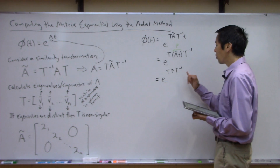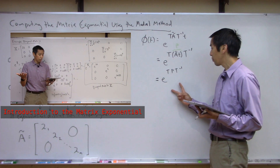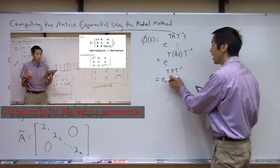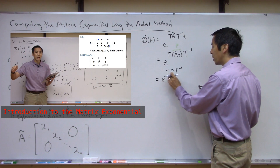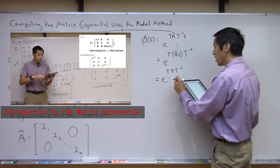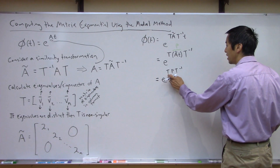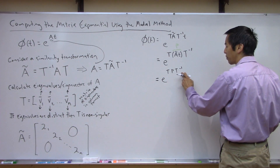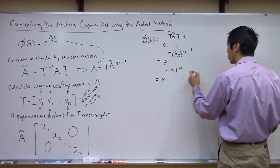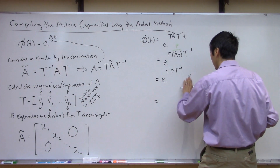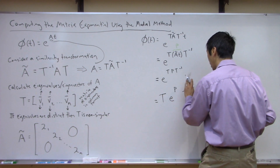Remember, in our video on the introduction to the matrix exponential, we discussed properties of the matrix exponential. One property is that if you have a matrix exponential of the form E to the (T P T-inverse), the T and T-inverse can fall off to either side. So I can write this as T times E to the P times T-inverse.